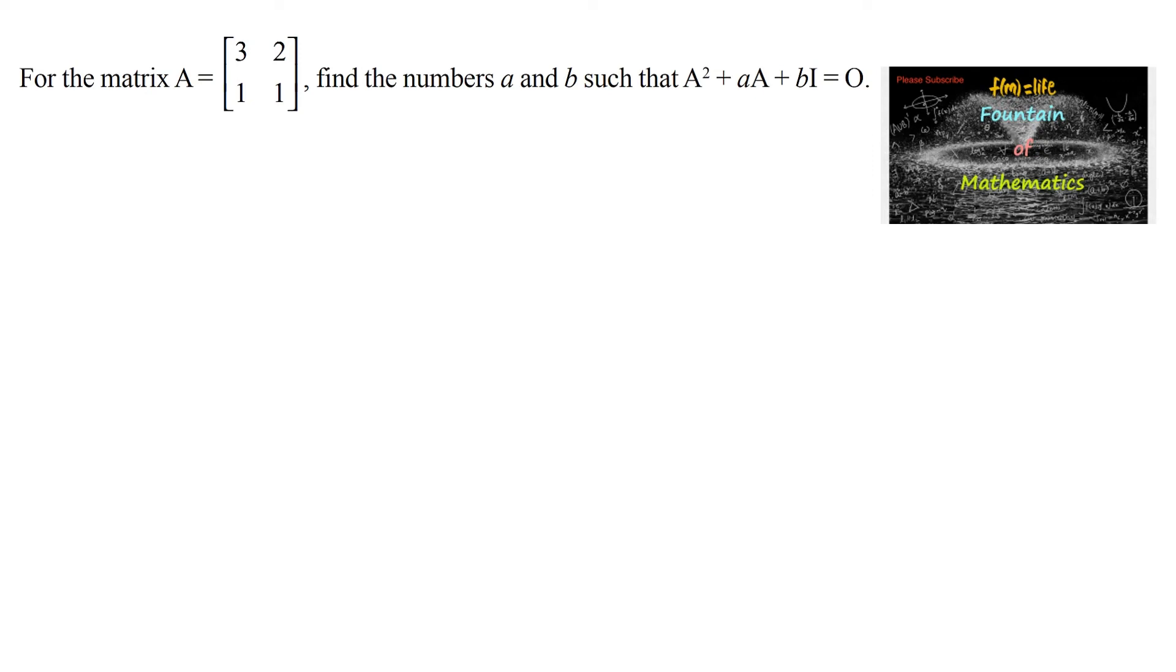For the matrix A equals [3, 2; 1, 1], a 2 by 2 matrix, find the values of a and b such that A² + aA + bI = 0, where I is the identity matrix [1, 0; 0, 1].